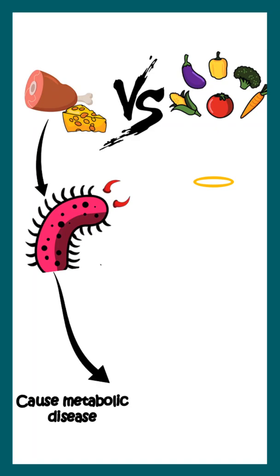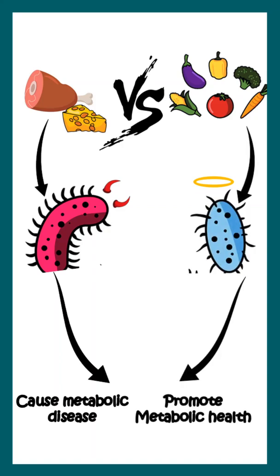In contrast, if we eat fruits, vegetables, and lots of fiber-rich food, then it would promote metabolic health and trigger good bacteria. So overall, our gut microbiome is highly dependent on the food that we eat.